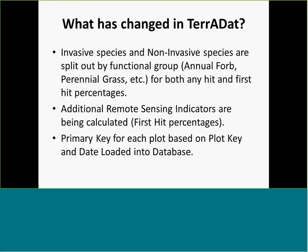Terradat has changed a little bit. The first iteration came out in January and many of you were on that first webinar. The things that have changed are in the details of the attribute table — the indicators that we're actually calculating have changed. We have split out invasive species and non-invasive species in all the functional groups. So for each functional group, there's going to be a non-invasive and an invasive — for example, non-invasive annual forb, invasive annual forb, non-invasive perennial grass. You get the idea.